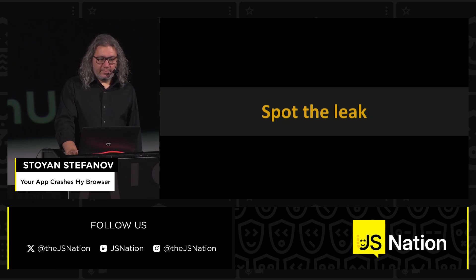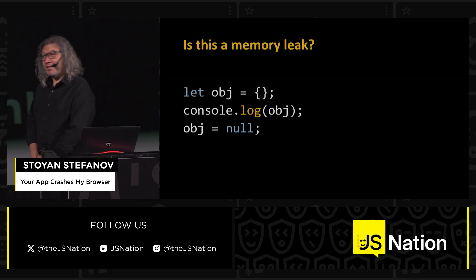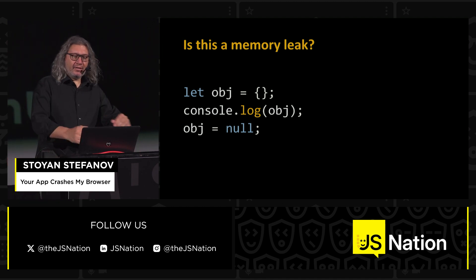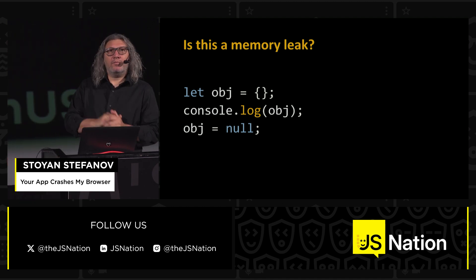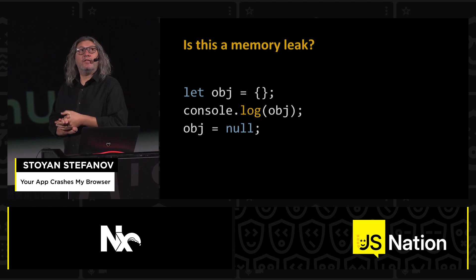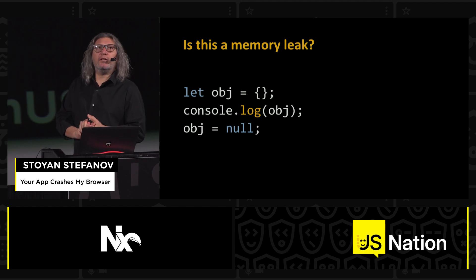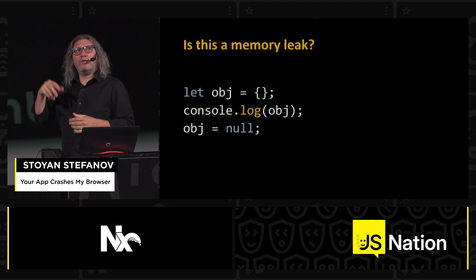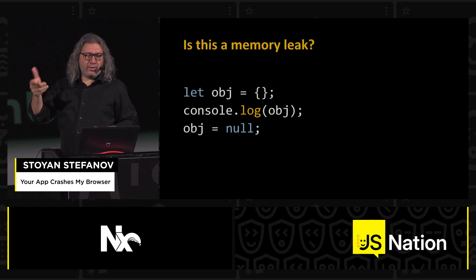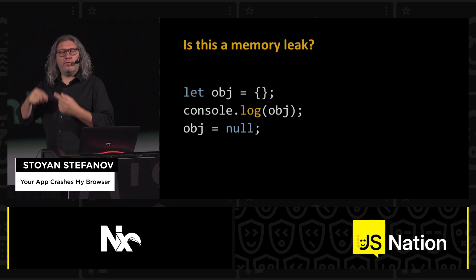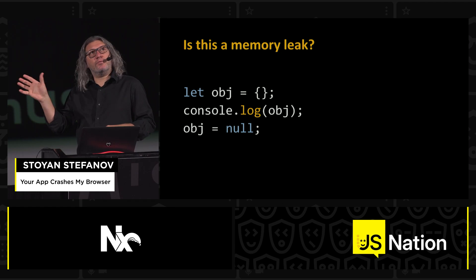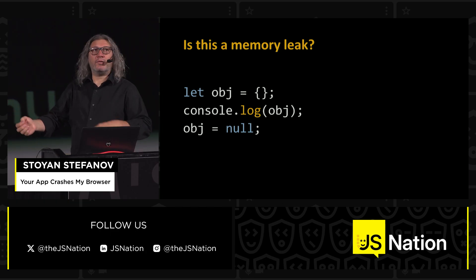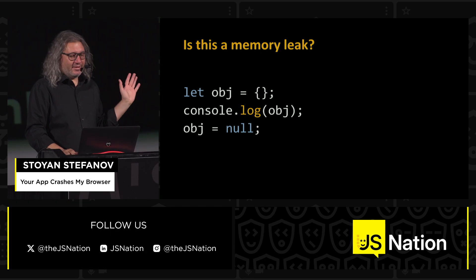Spot the leak again — that one's weird. Is this a memory leak? Turns out it is. Turns out the console retains some references to the stuff it logs. You can actually explore this in the Memory tab in Chrome when you take a snapshot — you can filter by just things retained by the console. But whoever puts console logs in production — no one ever, that has never happened.